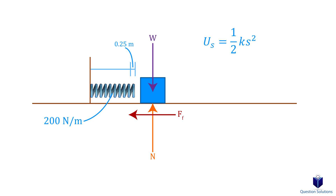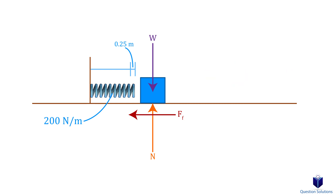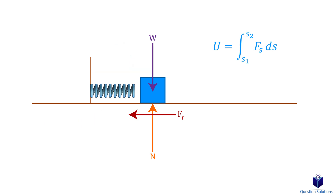In our case, the work is equal to half times 200 times 0.25 squared. If the stiffness of the spring is not constant, then we integrate it from the initial position to the final position.